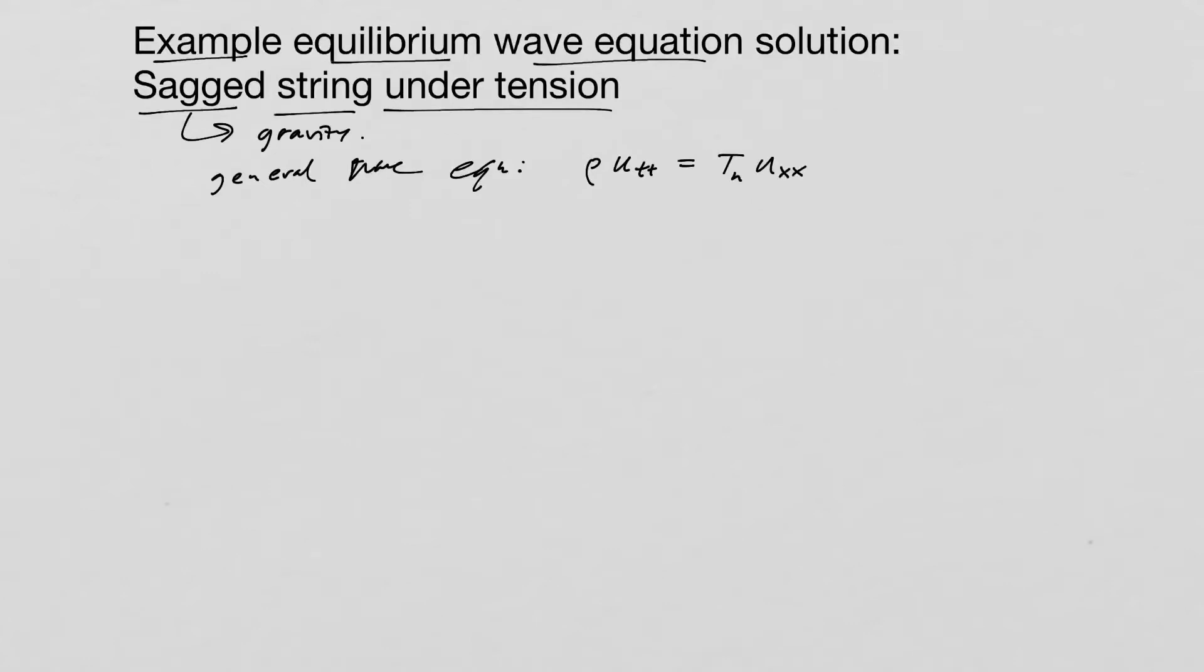The second spatial derivative, plus F, which is going to be an applied force. This is actually going to be a pressure because it's force per unit space. So this is your wave equation in the most general form.